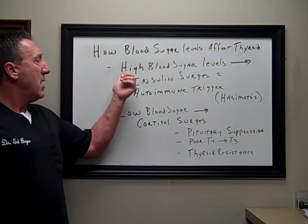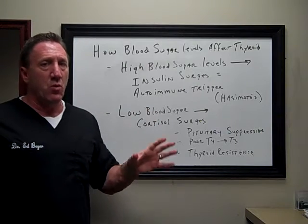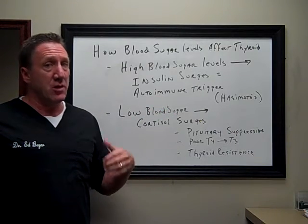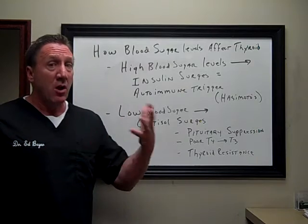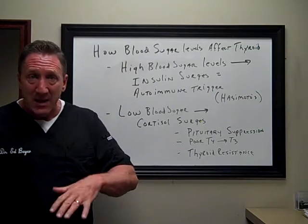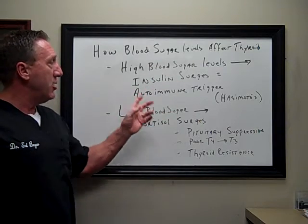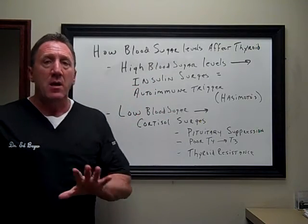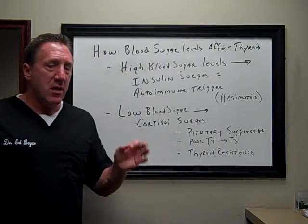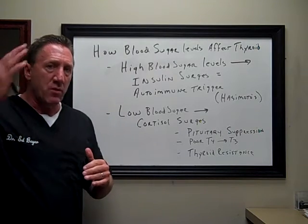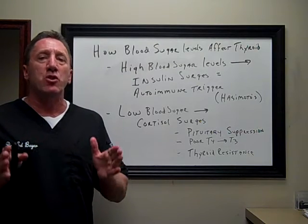There are a lot of players when it comes to the blood sugar game, not just diet and exercise, but thyroid, liver, pancreas, adrenal function, inflammation, and pain will elevate your blood sugar levels. Whatever is elevating your blood sugar levels, you're going to get these insulin surges. And insulin, when it's elevated — when you get a surge of insulin — that is a common autoimmune trigger.